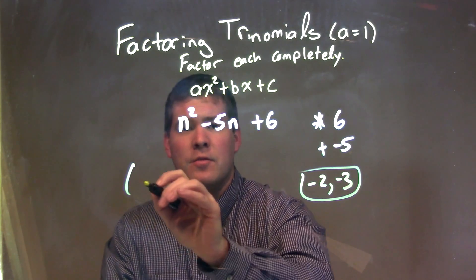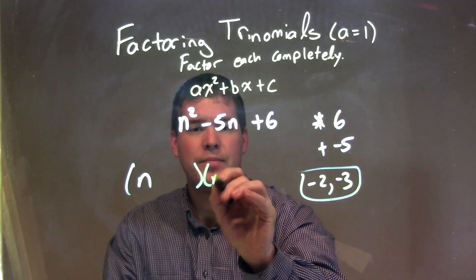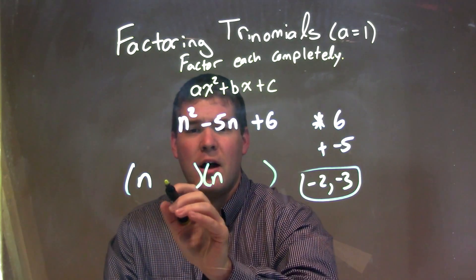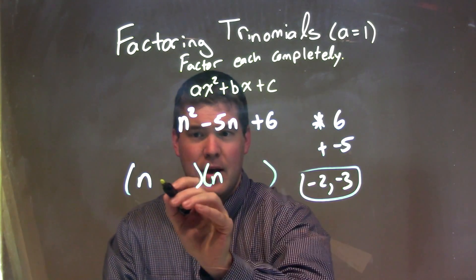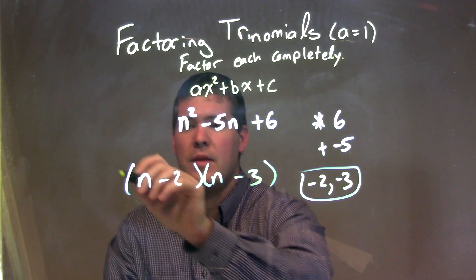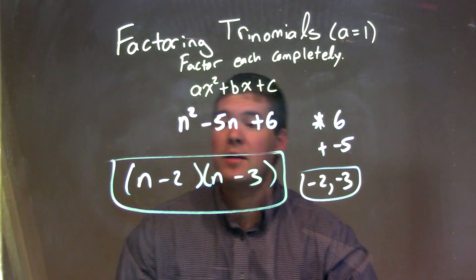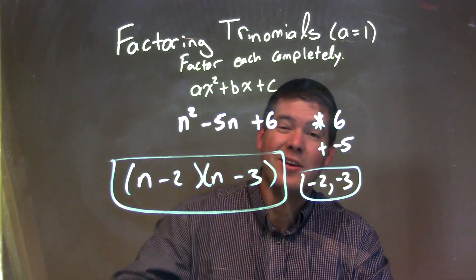So I write this in factored form. I have my two parentheses like this, and then put our two numbers here that we found: n minus 2, n minus 3. Our final answer here is n minus 2 times n minus 3.